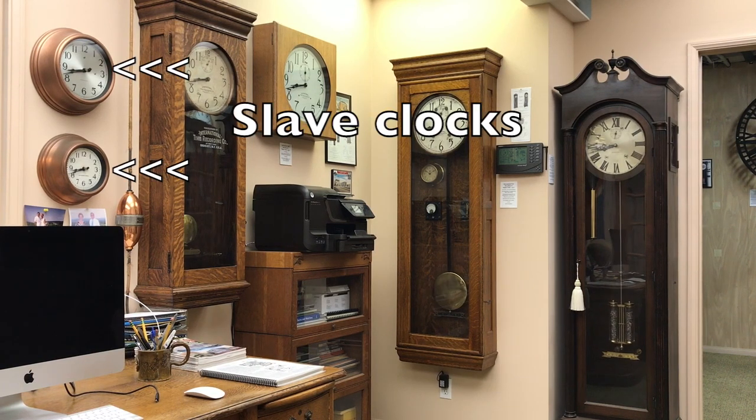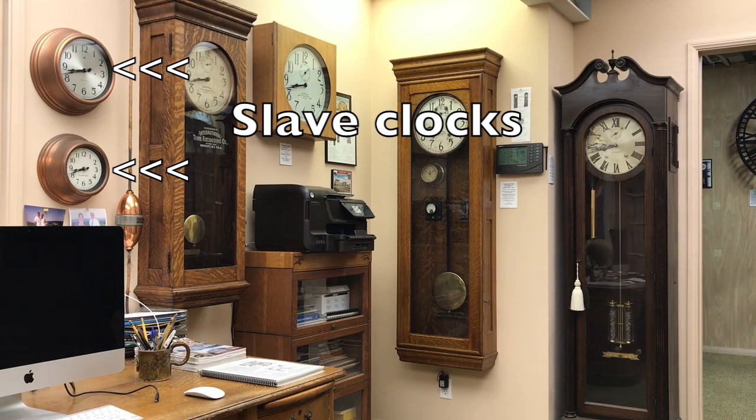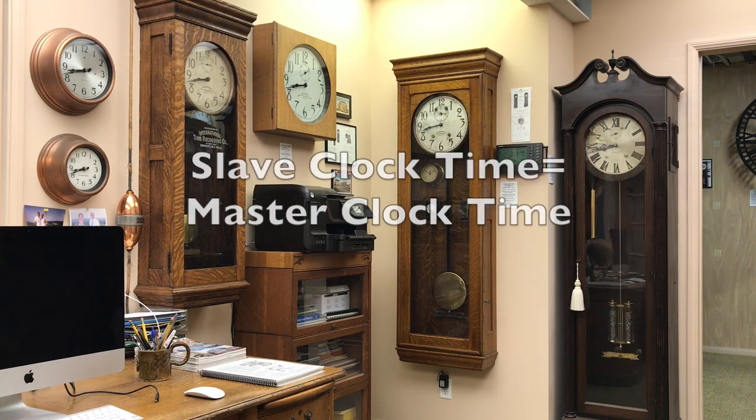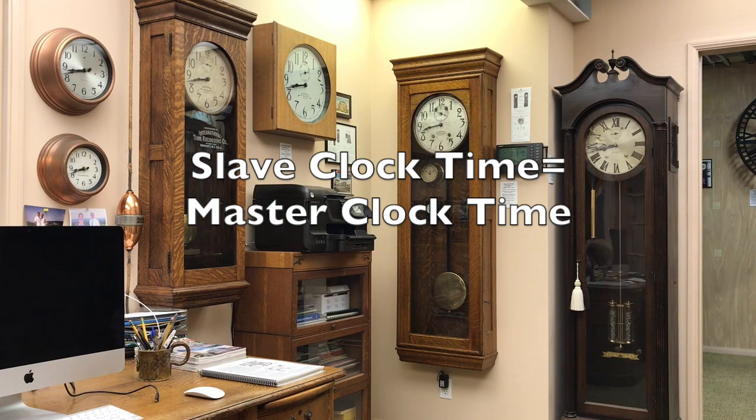Slave clocks are connected via a pair of wires to the master clock, and every minute the master clock sends an electrical impulse to the slaves advancing the hands one minute. When all is well, the slave clock time is exactly the same as the master clock time.